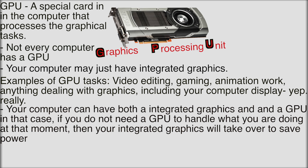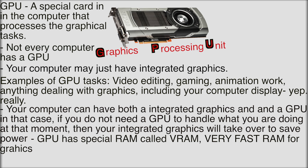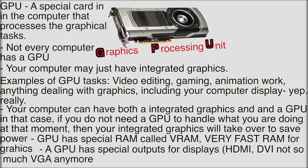GPU has special RAM on the inside — it's called VRAM — and this RAM is very fast and it's meant to handle graphics. It also has special outputs on the side for VGA, well, not VGA so much anymore, VGA is pretty old. DVI, which stands for DisplayPort, it also has HDMI on it, so you can plug in your display through the GPU on the back of your computer.